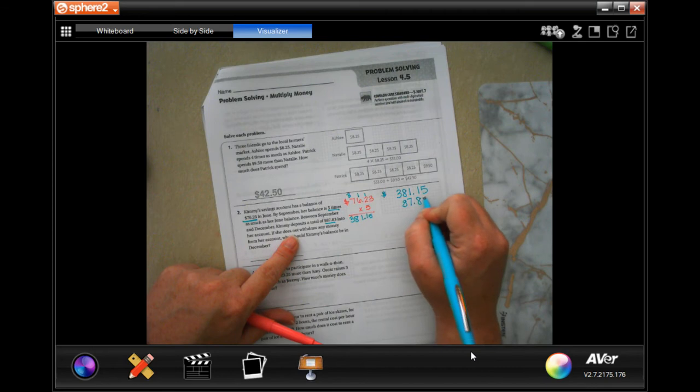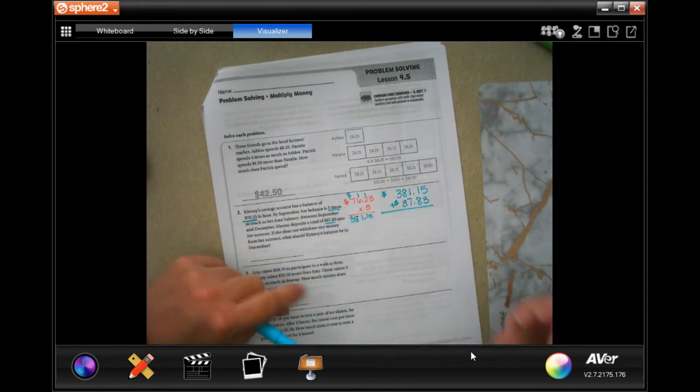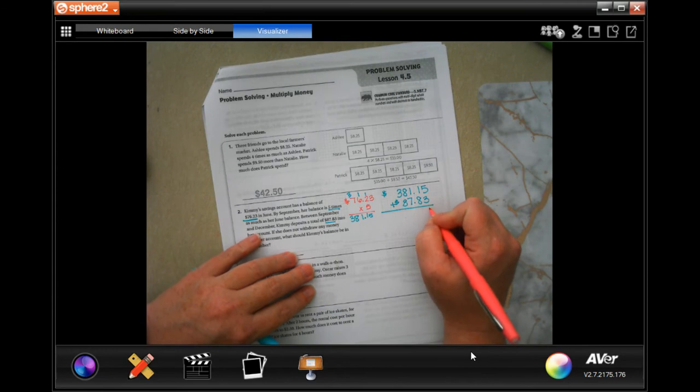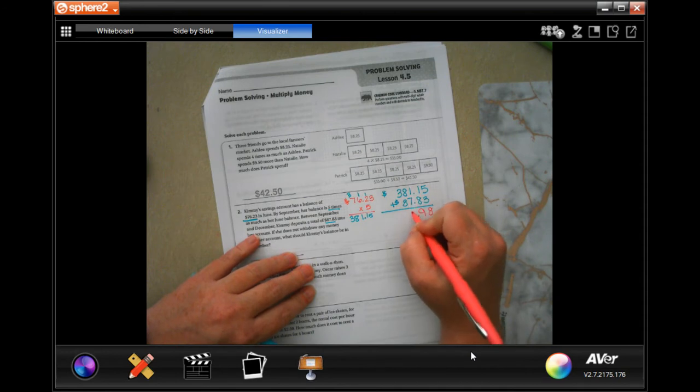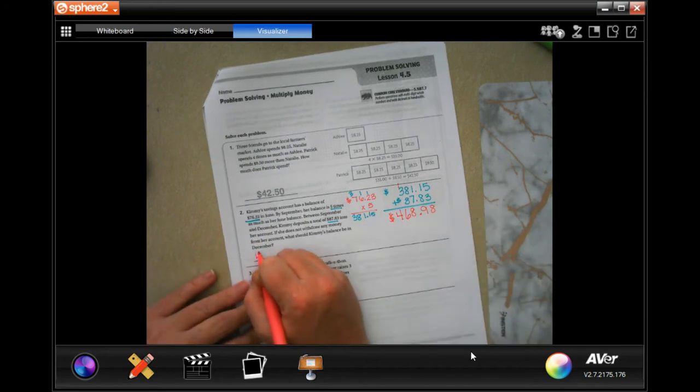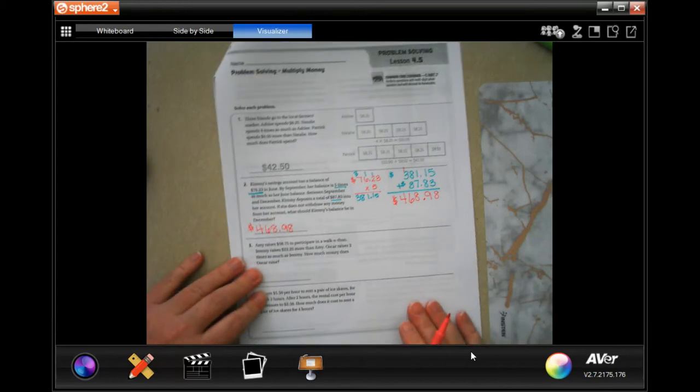Remember to line up your decimals when you are adding and subtracting decimals. Now we're going to go ahead and add, so 5 plus 3 is 8, 1 plus 8 is 9, bring my decimal down, 1 plus 7 is 8, 8 plus 8 is 16, carry the 1, and 1 plus 3 is 4. So your answer will be $468.98.